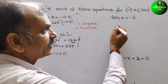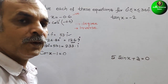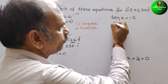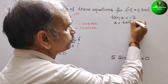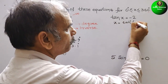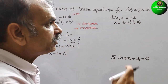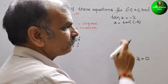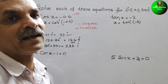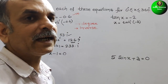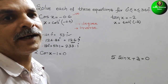Next: tan x = -2. So x = tan⁻¹(-2). This is also negative. The negative of tan lies in the second and fourth quadrant. So it will lie in the second and fourth quadrant.